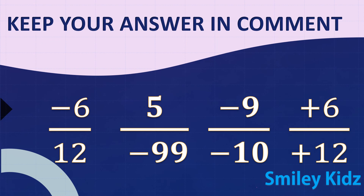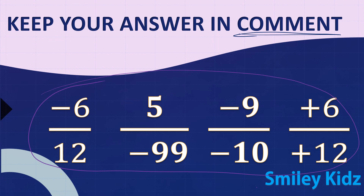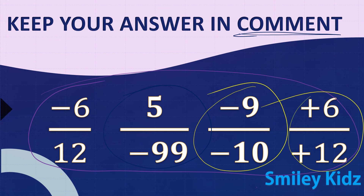Now a small test for you all. Among these numbers, identify which are positive rational numbers and which are negative rational numbers, and put your answers in the comment section. The numbers are: minus 6 by 12, 5 by minus 99, minus 9 by minus 10, and plus 6 by plus 12.